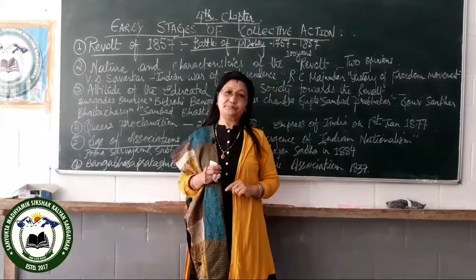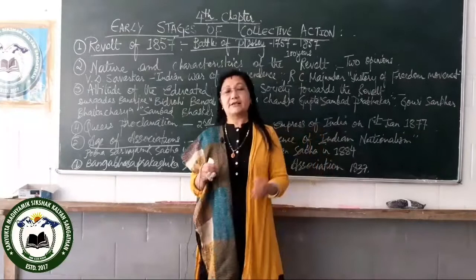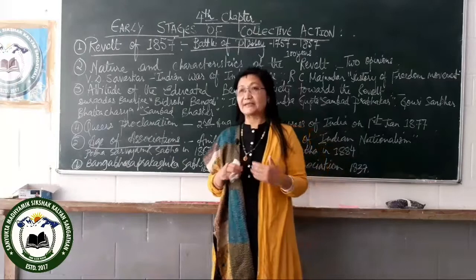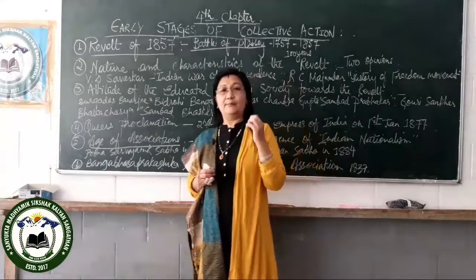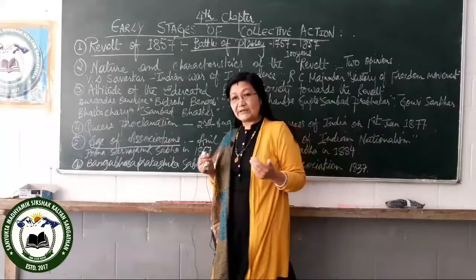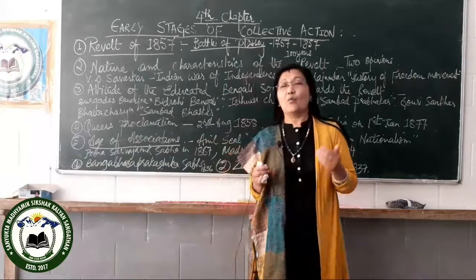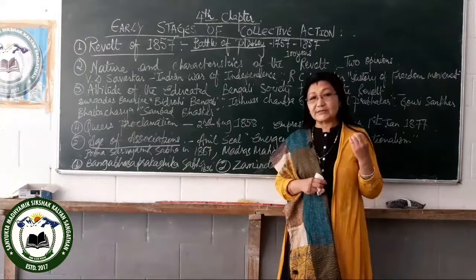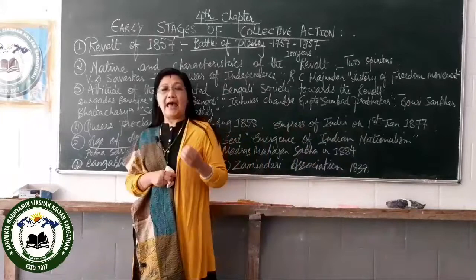In Meerut, the rebels broke open the prison and released the prisoners. After that they marched towards Delhi, captured it, and proclaimed Bahadur Shah Zafar II, the last Mughal Emperor, as the Emperor of India. At that time there were many rebel leaders. One was Nana Sahib, the adopted son of Peshwa Bajirao, who was denied his pension by the British and fought against them in Kanpur.